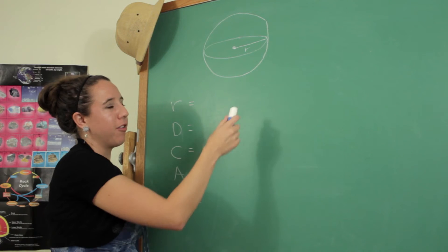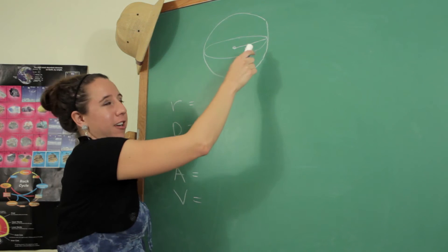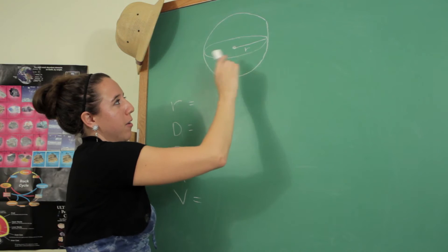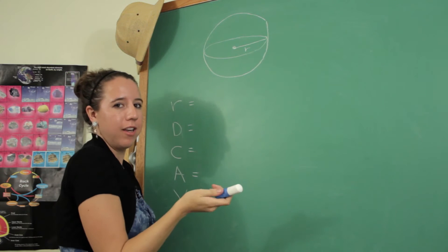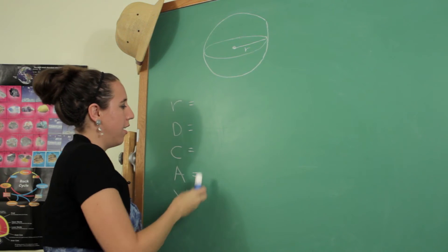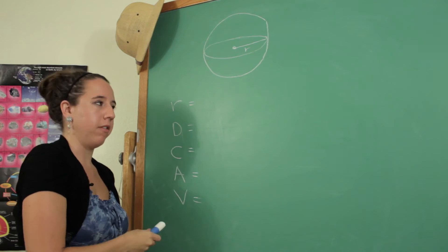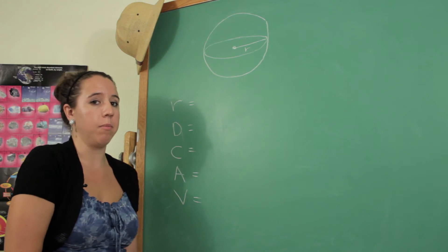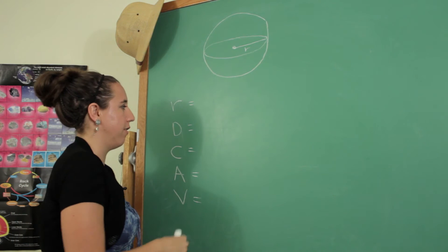I've drawn a three-dimensional sphere on a two-dimensional chalkboard and defined R here — the radius. All of the five parameters are supposed to be defined in terms of R, but we'll get to that in just a second.